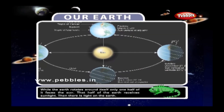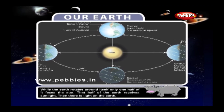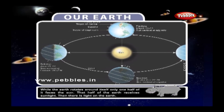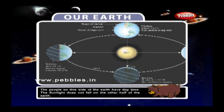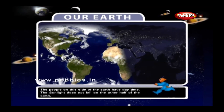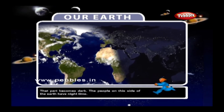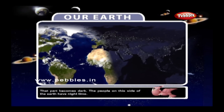While the Earth rotates round itself, only one half of its face is toward the Sun. That half of the Earth receives sunlight, so there is light on the Earth. The people on this side of the Earth have daytime. The sunlight does not fall on the other half of the Earth — that part becomes dark, and the people on this side have nighttime.